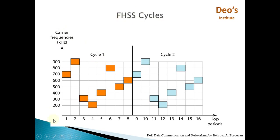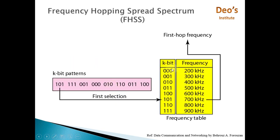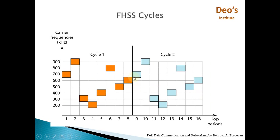Now see the FHSS cycle. For the first cycle, your data will be at 700 kHz. In the second period it will be 900, for the third period it will be 300, then 200, then 400, then 800, then 500, and then 600. The same pattern is used for the next cycle — when the last one at 600 is done, data transmission begins again with bandwidths 700, 900, 400, 200, and so on.